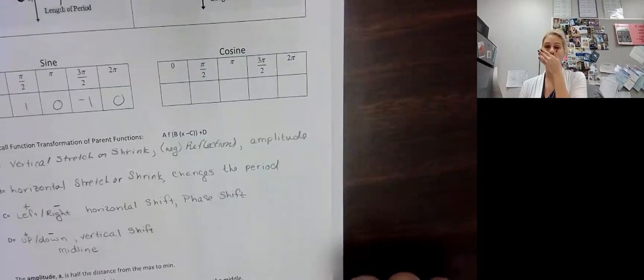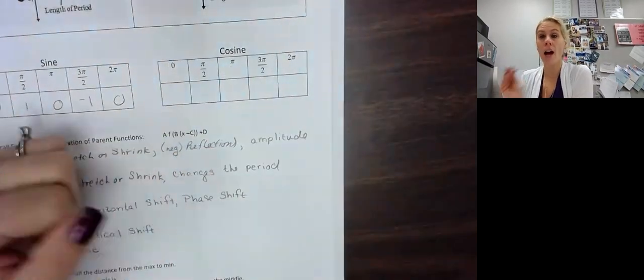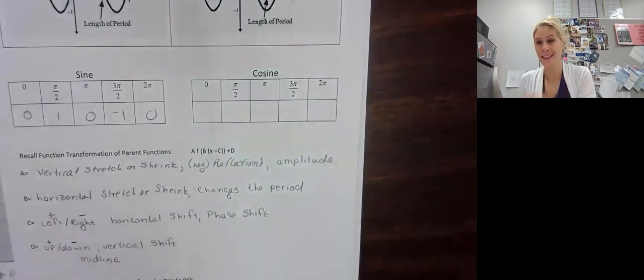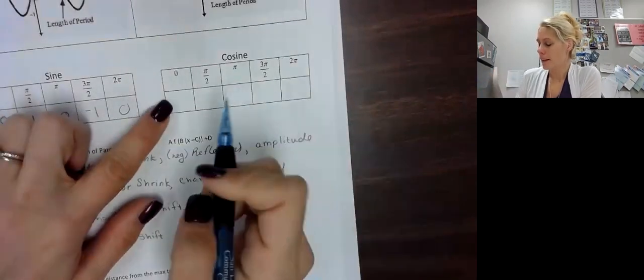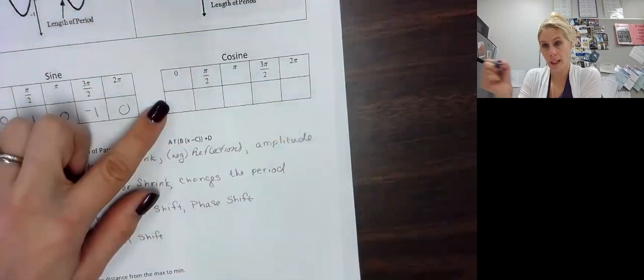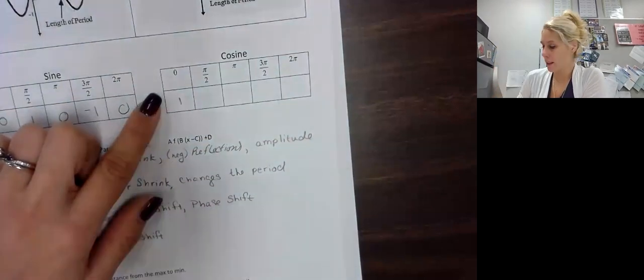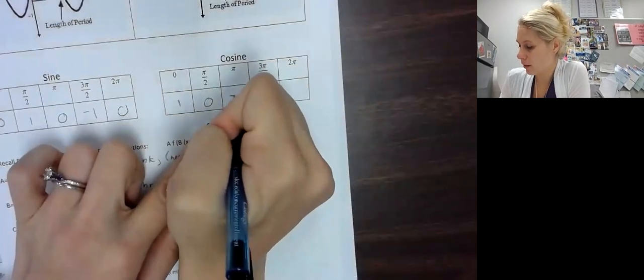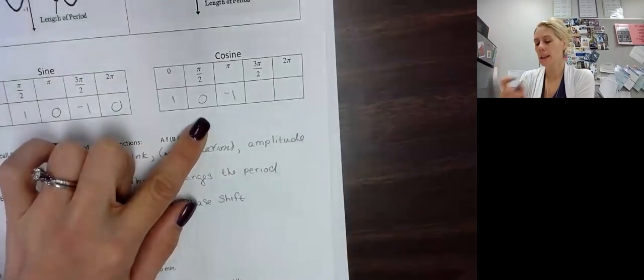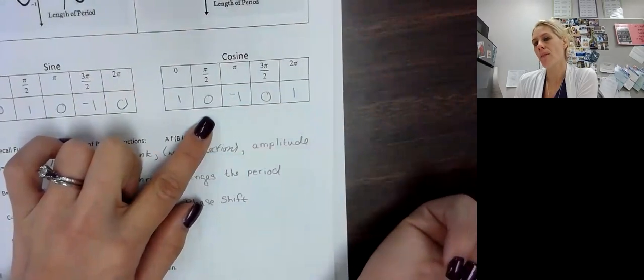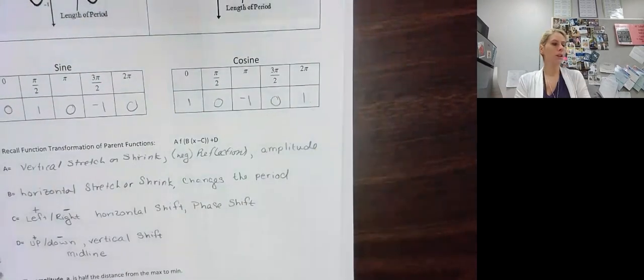Let's go back to our unit circle and look at what the parent function of cosine looks like. Cosine is the x-value of our coordinate pair. So at zero on the unit circle, the x-value is 1. At pi over 2, the first coordinate is 0. At pi, the x-coordinate is negative 1. At 3 pi over 2, it's 0. Completing the full circle, we're back at 1. So our cosine parent function values are 1, 0, negative 1, 0, and 1.